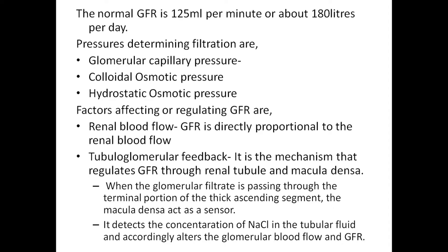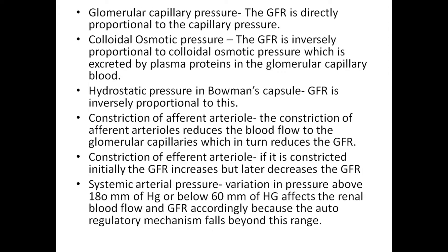The factors affecting glomerular filtration rate include renal blood flow, which is directly proportional to GFR. Tubuloglomerular feedback is the mechanism that regulates GFR through the renal tubule and macula densa. When glomerular filtrate passes through the terminal portion of the thick ascending segment, the macula densa acts as a sensor and detects the concentration of sodium chloride in the tubular fluid, accordingly altering glomerular blood flow and GFR.